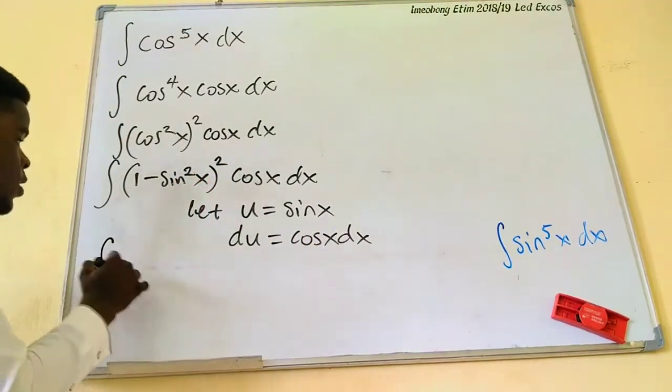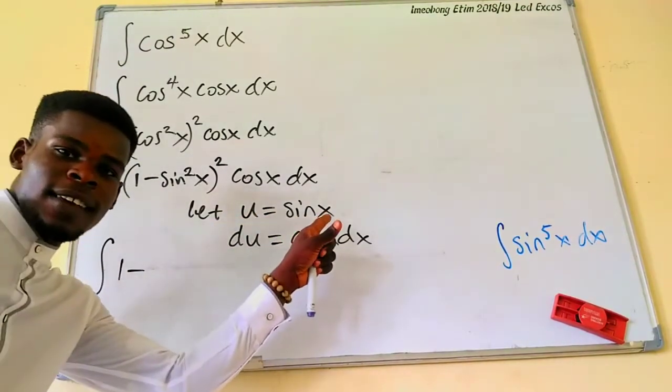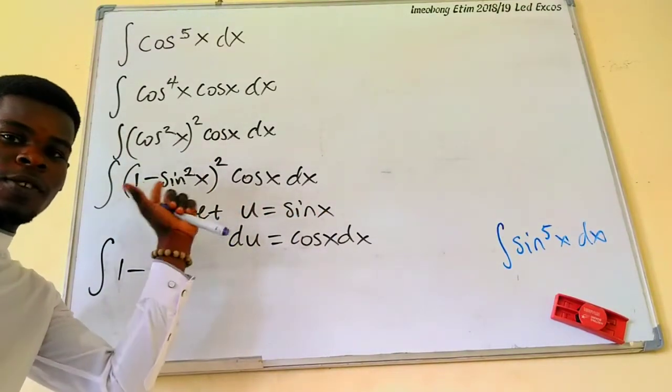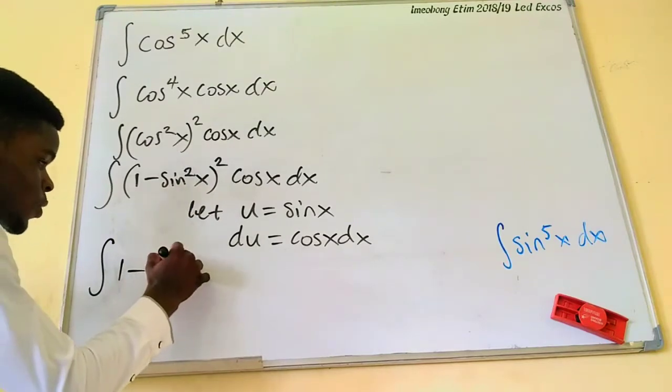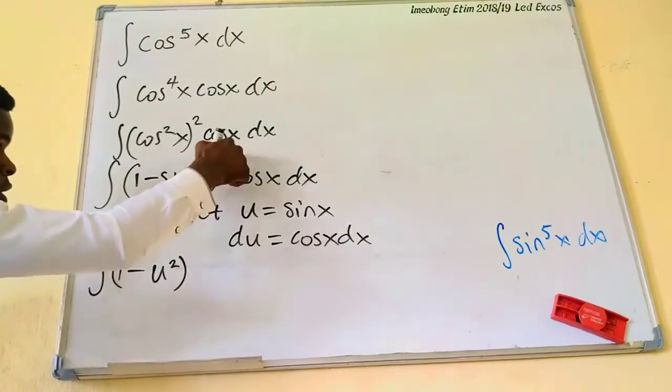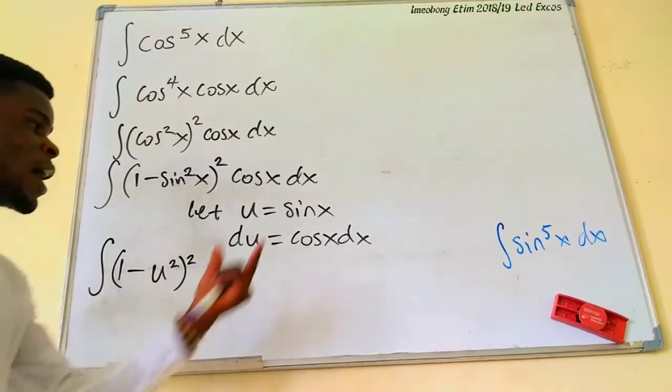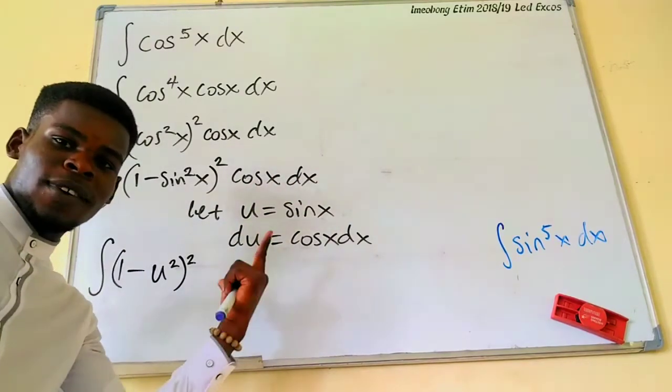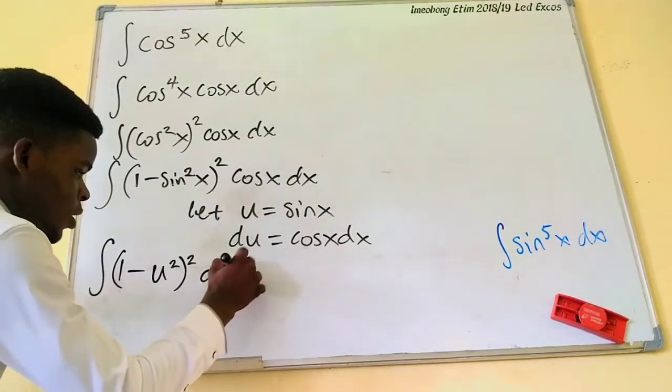I'm going to have the integral of 1 minus, well, since u is sine x, then sine square x is going to be u squared. So let's have it here to the u squared. And you know, this is just the square. I put down the square again. And cosine of x dx just enters with the du. Very nice. So we just put down the du.